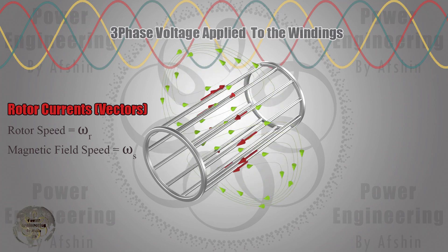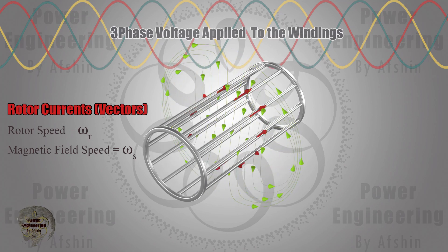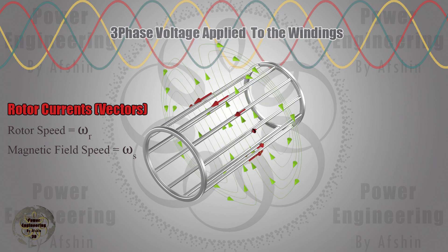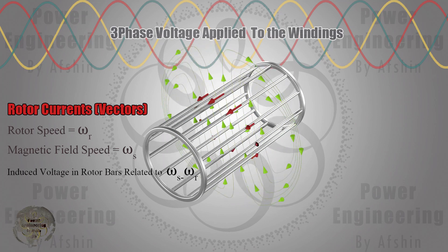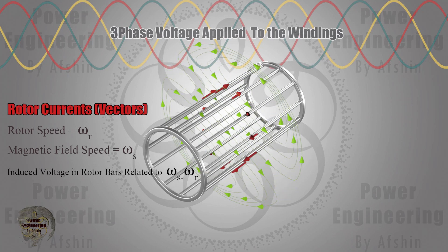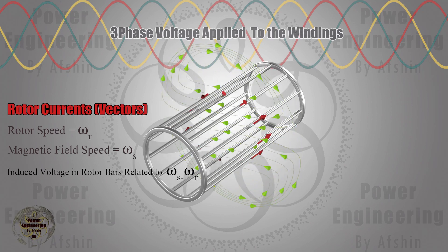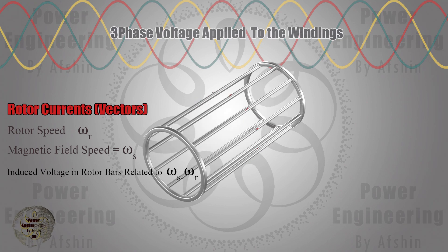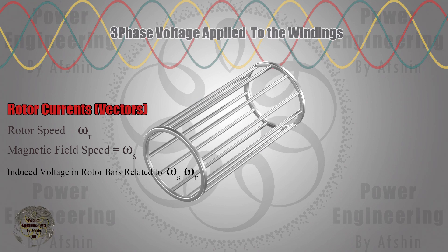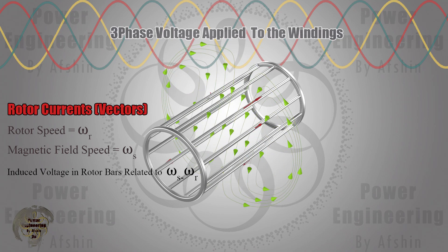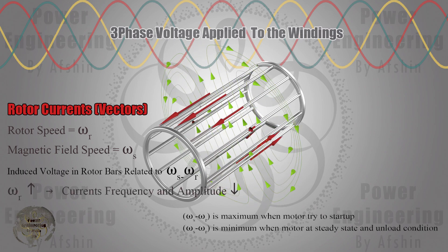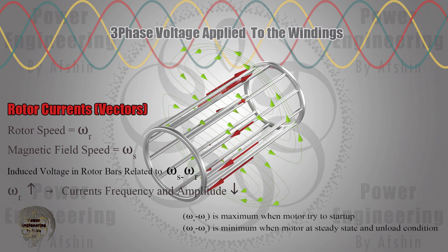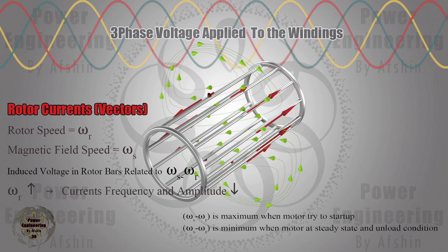Now, let's relate the rotor's initial conditions to the explanation at the start of this video. The rotor bars act like short-circuited loops and the induced voltage in them depends on the amplitude and speed of rotating magnetic field. When the rotor is stationary, the rotating field moves at its maximum frequency relative to the rotor, causing the maximum possible current in the rotor bars.